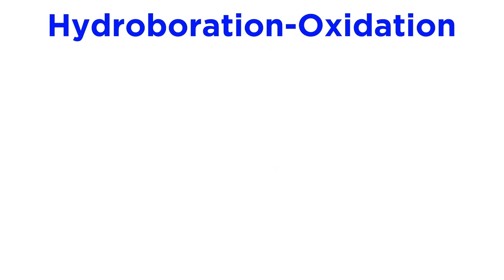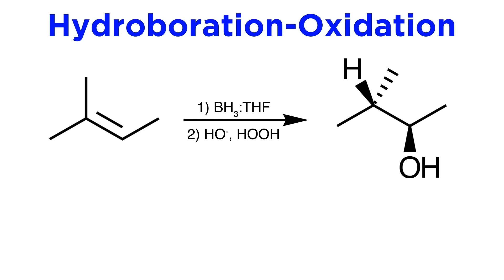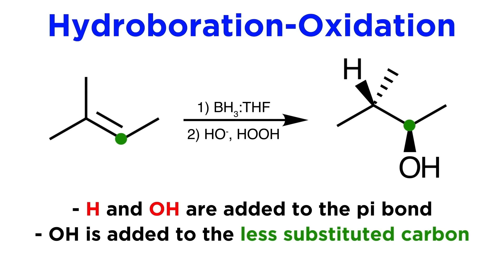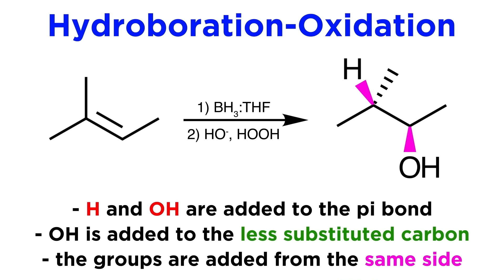If more regiochemical or stereochemical control is desired, we can use more rigorous methods. Hydroboration-oxidation uses BH3 and THF in the first step, and hydrogen peroxide in the second step, and this will yield the syn-anti-Markovnikov product. Recall that anti-Markovnikov means that the hydroxyl group ends up on the less substituted carbon of the two participating in the pi bond, and syn means that the hydrogen and hydroxyl being added will be syn to one another.